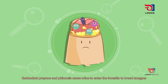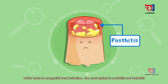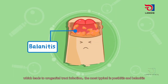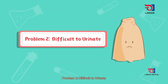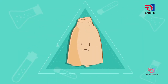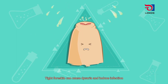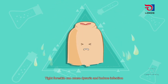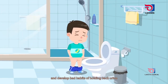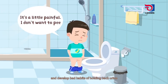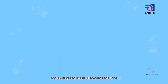What problems will redundant prepuce and phimosis bring? Problem one: inflammation. Redundant prepuce and phimosis cause urine to enter the foreskin and raise smegma, leading to urogenital tract infection — most typically posthitis and balanitis. Problem two: difficulty urinating. Tight foreskin can cause discomfort and induce infection. Severe phimosis can cause urinary retention and develop bad habits of holding back urine.